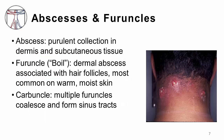Abscesses and furuncles both represent more deeply seated purulent infections when compared to folliculitis. Abscess is a word that describes a collection of purulent material, typically in the dermis and subcutaneous tissues. However, abscesses may occur anywhere in the body where there is a bacterial infection, such as the liver or the lung. Furuncle is a term used to describe an abscess that involves a hair follicle. The layman term for furuncle is a boil. In contrast to folliculitis, which remains largely superficial, furuncles extend down into the dermis and subcutaneous tissue, forming a firm, tender nodule that progresses to an abscess there.